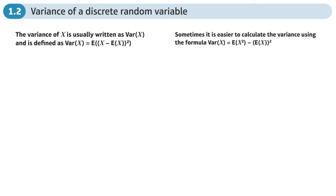This is the second section of the discrete random variables chapter and here we're looking at finding the variance of a discrete random variable. Now we know how to find the mean E of X where you multiply each outcome by its probability.